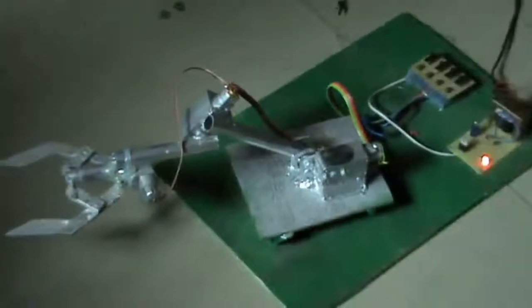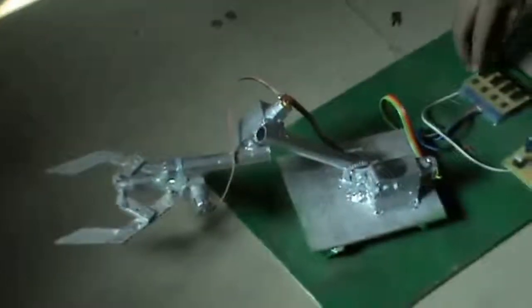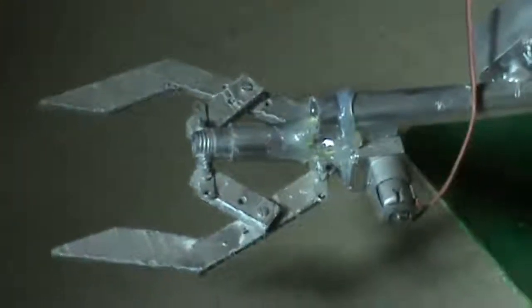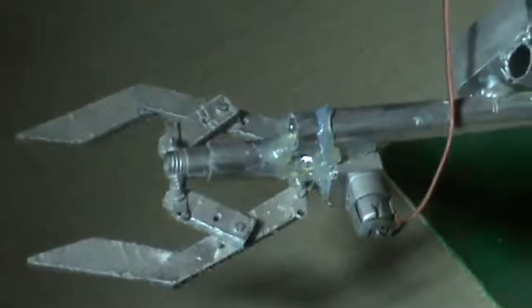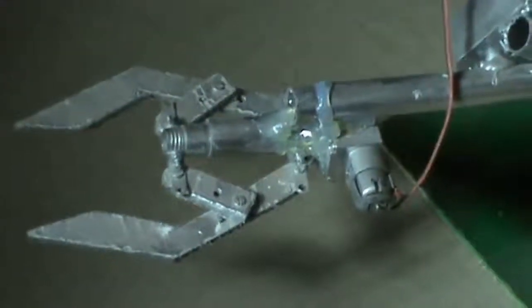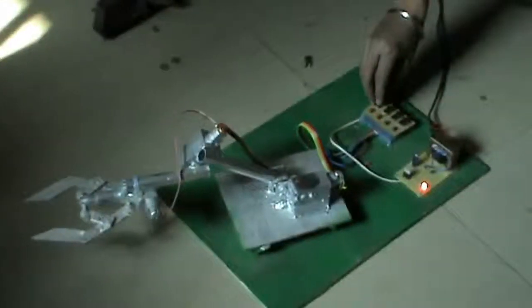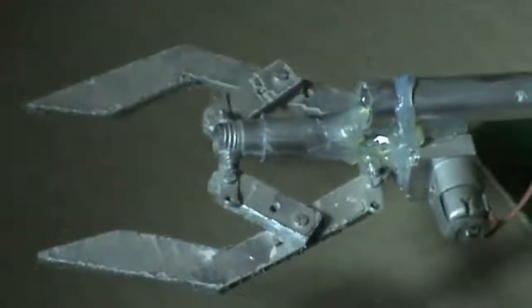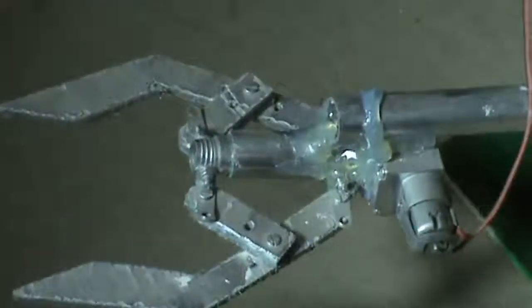Now this can be used to pick any object. For closing the jaw, we need to press the last button. As you can see, the jaw is closing now. If we need to open, we need to toggle the switch from there. If we again press, now the jaw will open. It will keep on opening as you can see.